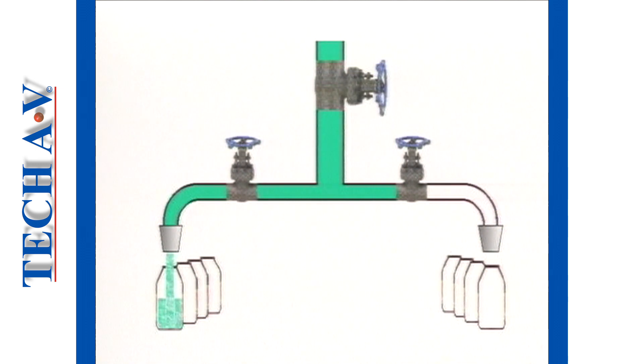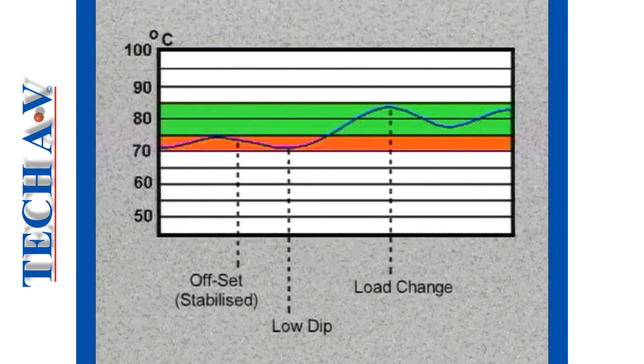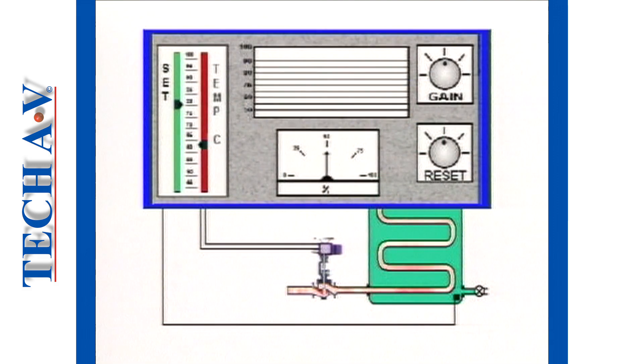Let's once again look at the continuous process, specifically at what occurred when the second bottling line was restarted. When start-up of line 2 occurred, the increased or new load resulted in a product temperature drop. Proportional action caused the steam valve to open in proportion to the temperature change.